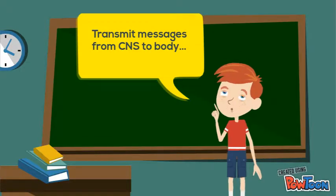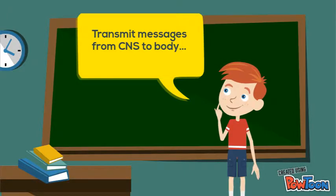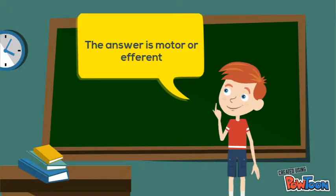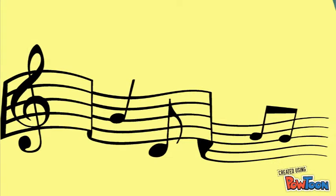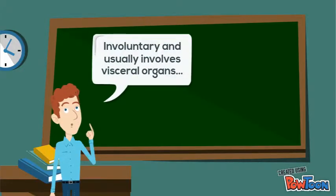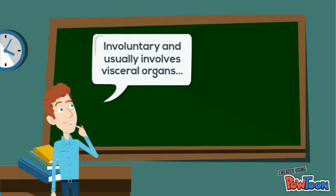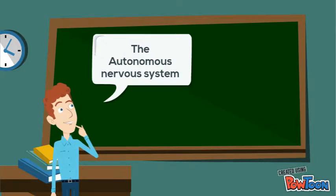Transmit messages from CNS to body. The answer is motor or efferent. Involuntary and usually involves visceral organs. The autonomic nervous system.